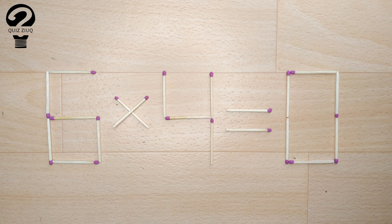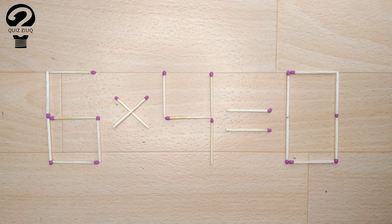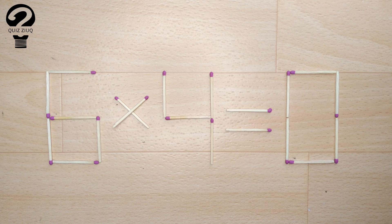We have this equation, 6 times 4 equals 0. Our equation is incorrect, and we need to move one match to make our equation correct.